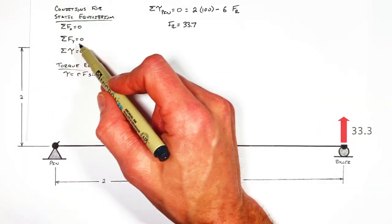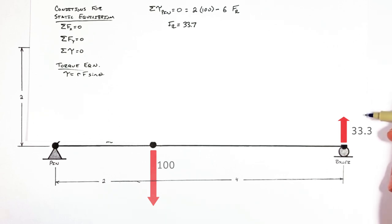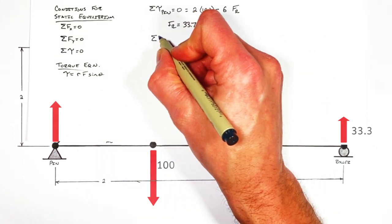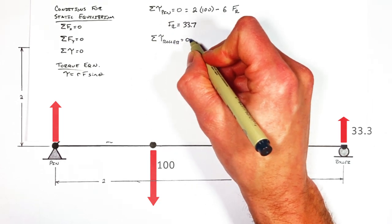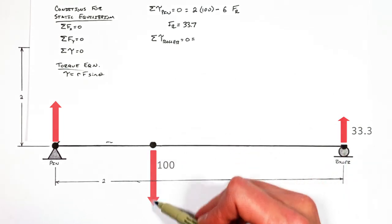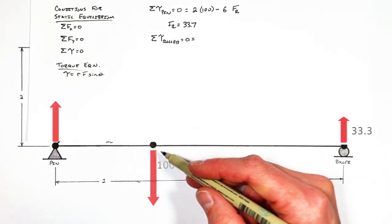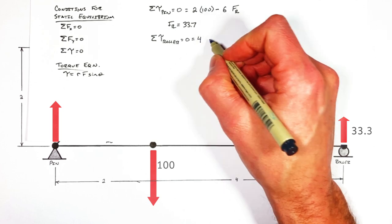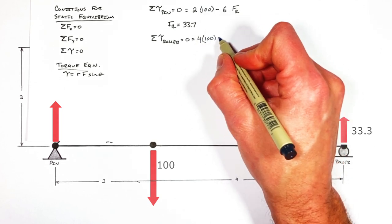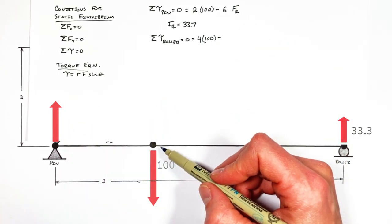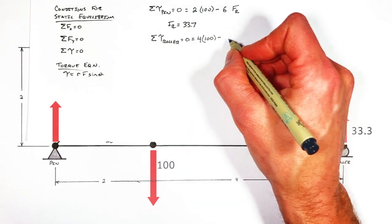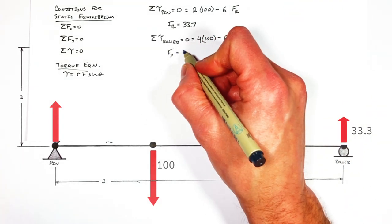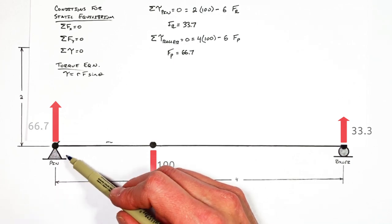Just as we applied the sum of all torques around the pin to solve for the force by the roller, we can apply the same equation to the roller to solve for the reaction force by the pin. So the sum of all torques around the roller must be zero. The load is a distance of four away from the roller, so we put in four times the magnitude of our load. In the opposite direction, acting upward, there's the reaction force by the pin at a distance of six from the roller. Solving for the force by the pin, we find the reaction force on the left side of this beam is 66.7.